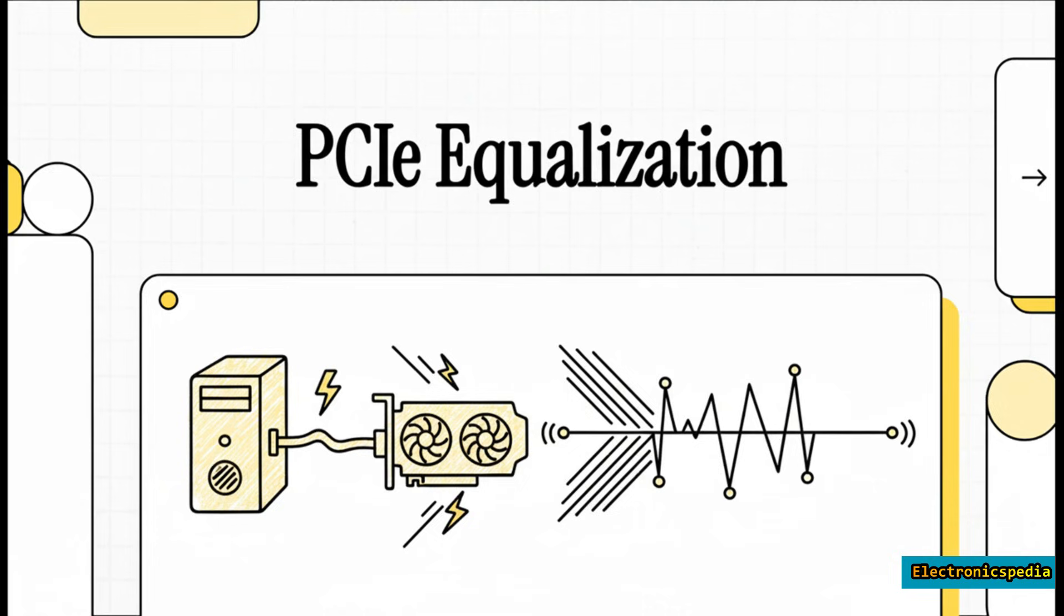Have you ever stopped to think about how your computer can move massive files in just the blink of an eye? Or how a graphics card can render entire beautiful worlds in real time? Well, it's not magic. It's actually a super high-speed conversation happening deep inside your machine. It's a secret language of electricity, and today we're going to decode it.